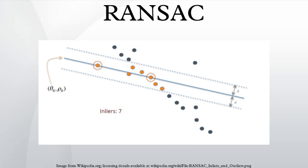The algorithm was first published by Fischler and Bolles at SRI International in 1981. They used RANSAC to solve the location-determination problem, where the goal is to determine the points in space that project onto an image into a set of landmarks with known locations.